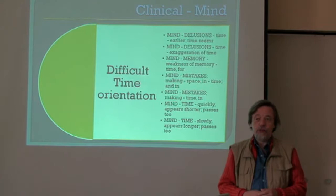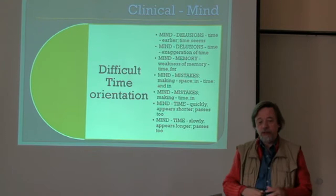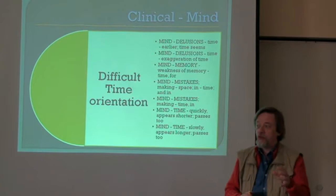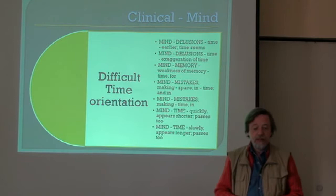So you have a bigger rubric — a meta-rubric, or whatever you want to call it, a more conceptual rubric — which relates to the clinical entity 'difficult time orientation.'